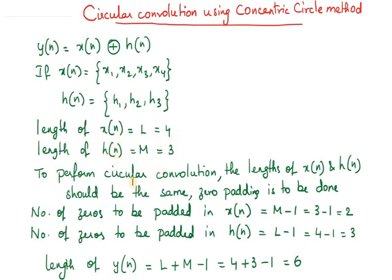One condition in circular convolution is that the length of both sequences should be the same. If the length is not the same, then we can do zero padding. Zero padding means adding extra zeros.